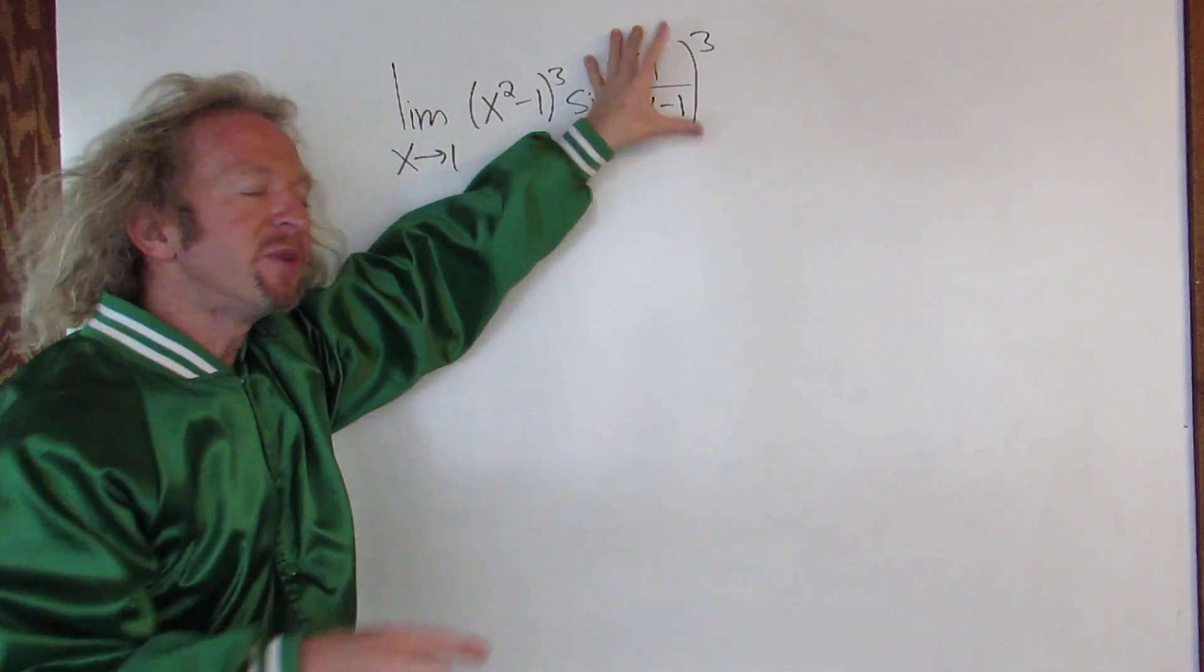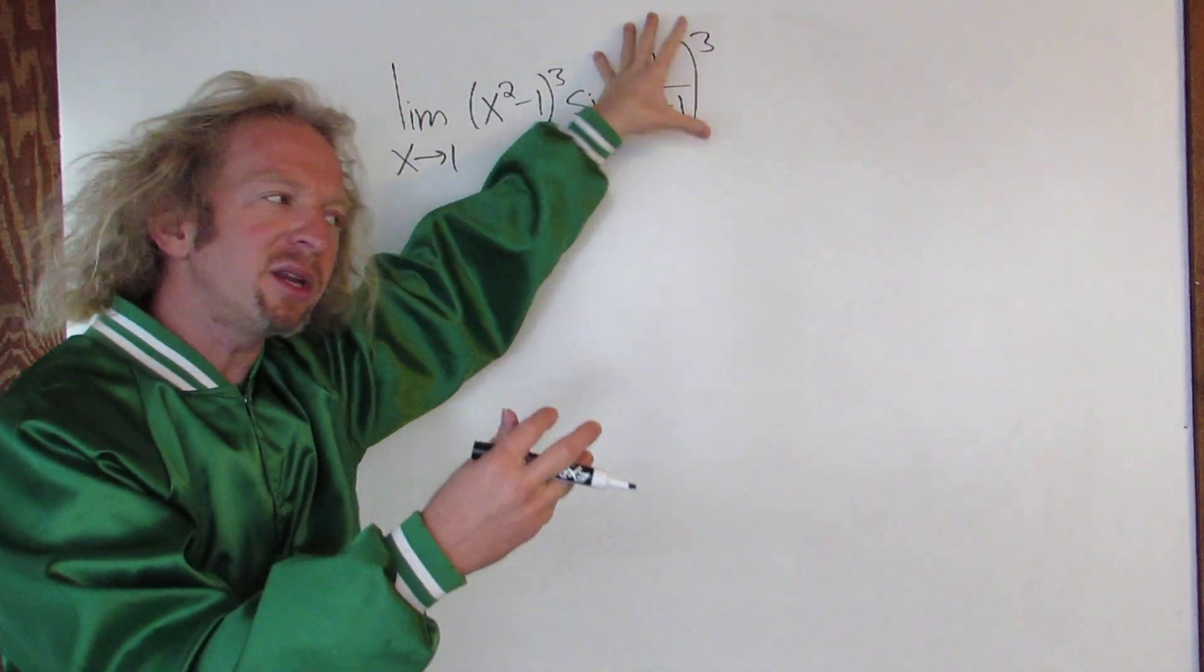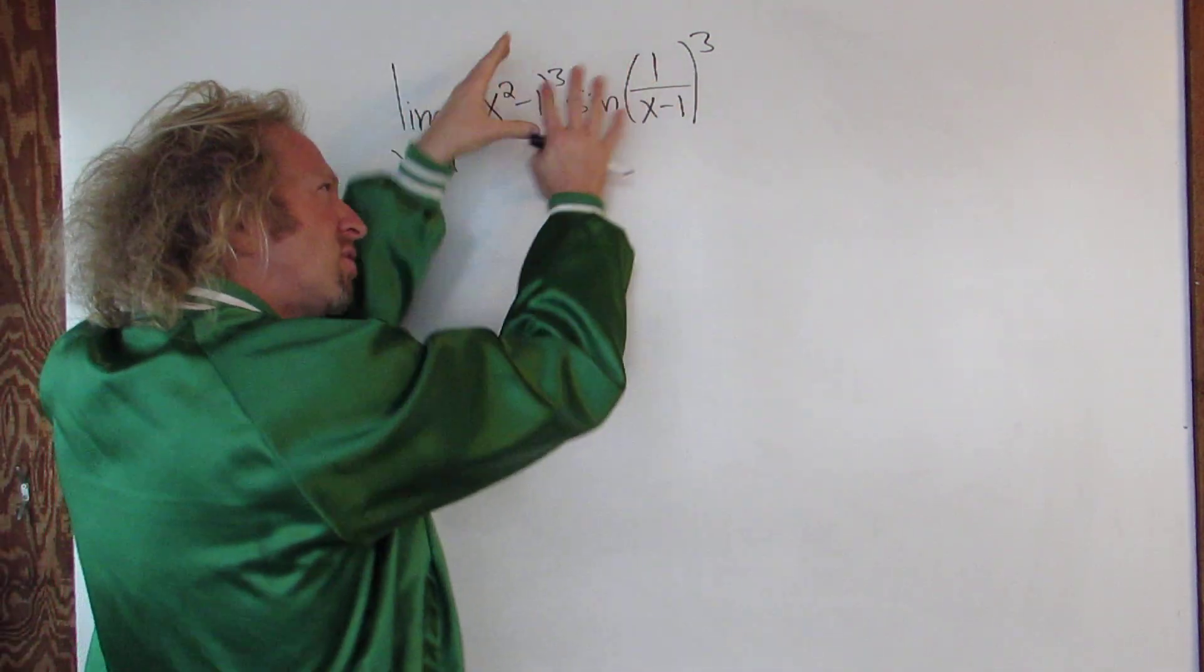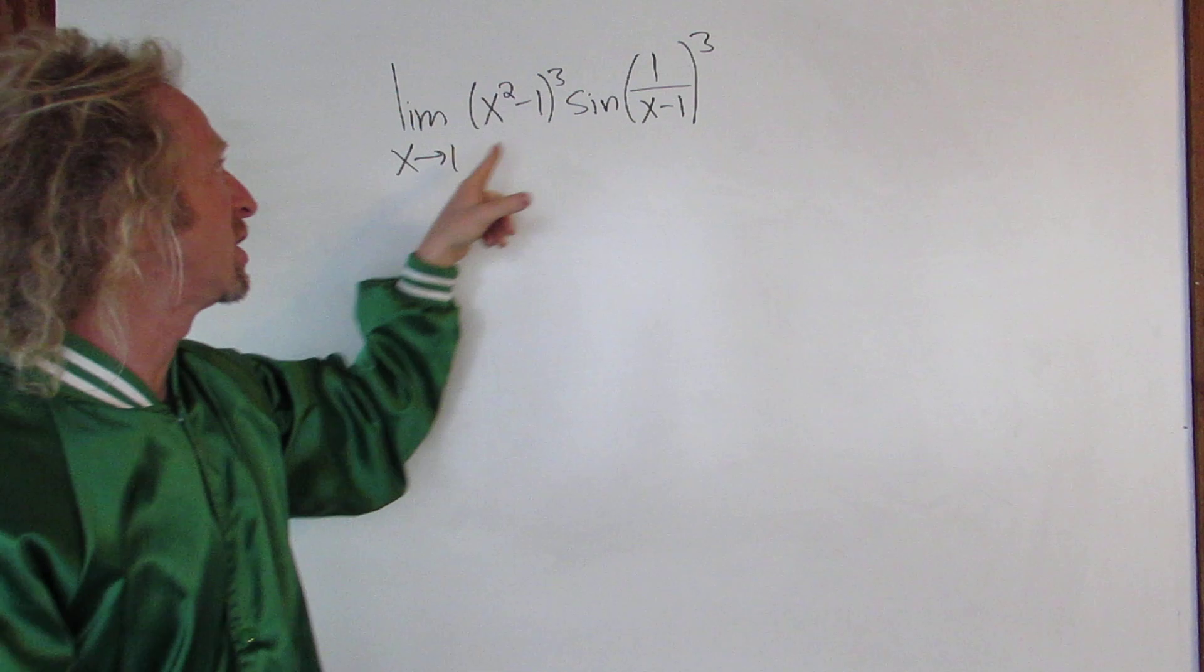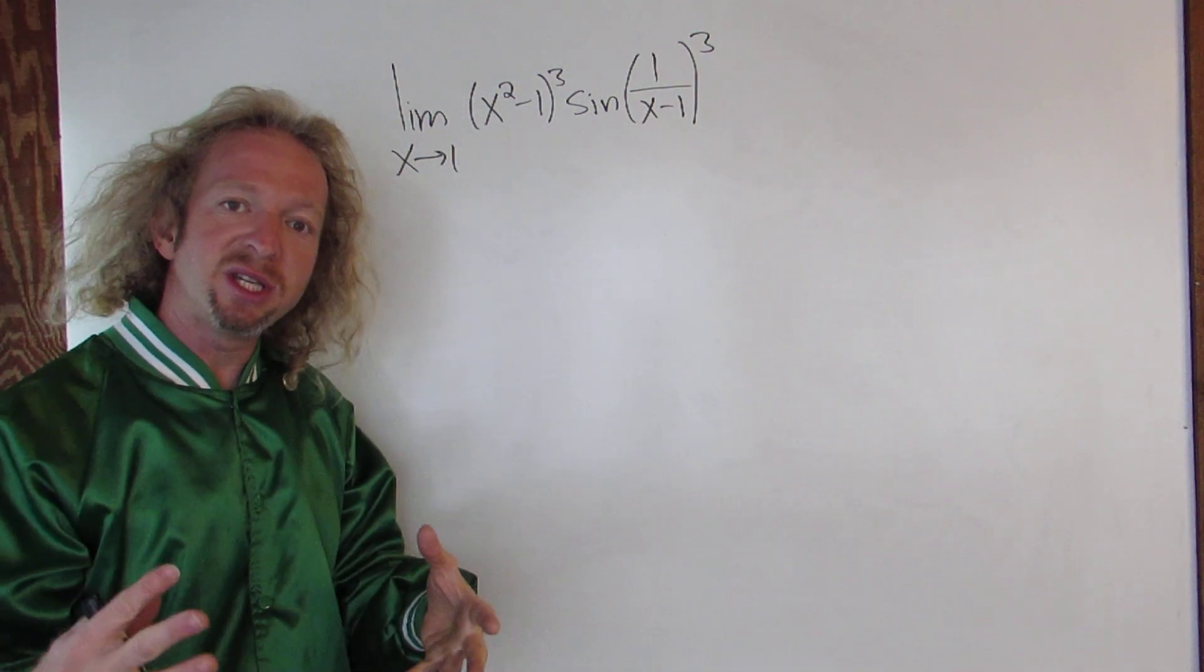And then x is approaching 1. So what's happening here is that this is going to 0 and this is trapped between negative 1 and 1. So in theory something approaching 0 times something trapped should give you 0. You'll notice if you just plug in 1 here it doesn't work, right? You get 1 over 0. So my idea is to use the squeeze theorem.